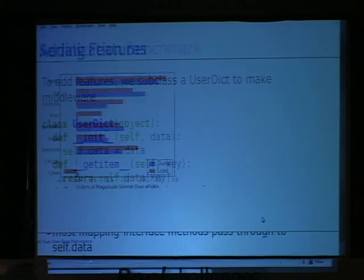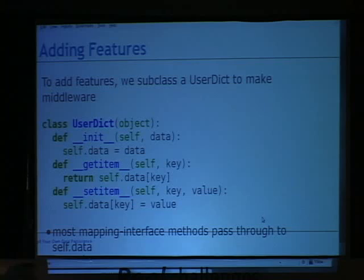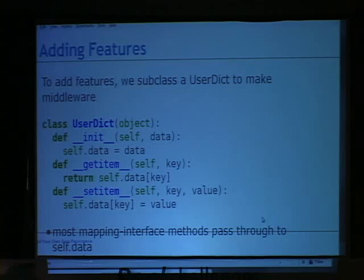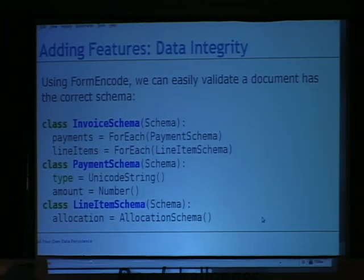Serialization is a feature, so how are we going to add it? We're going to use UserDict. UserDict is a way to construct a data pipeline — the mapping interface methods pass through to self.data, which is set when UserDict is initialized. This allows us to get a crack at the data on the way into storage and on the way out, or before or after it's deleted. We're just going to make a JSON serializer into a UserDict, loading and dumping in __getitem__ and __setitem__.